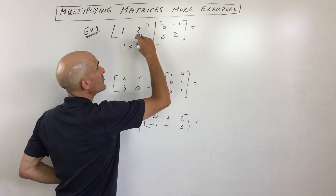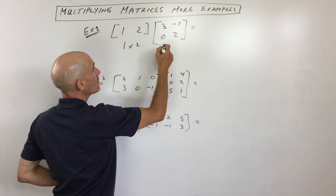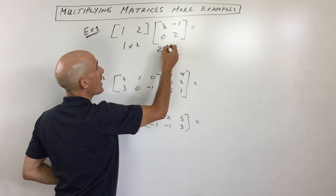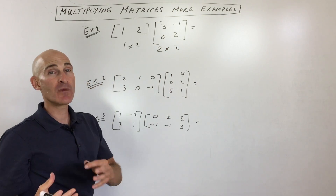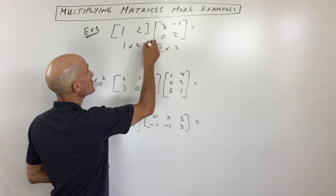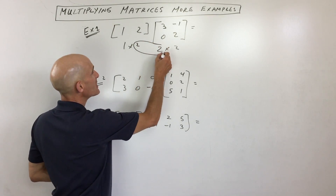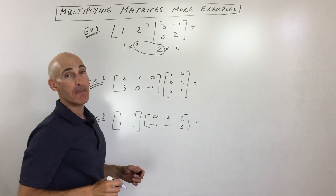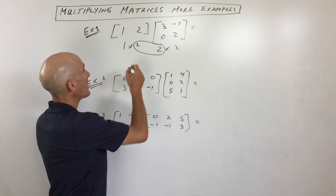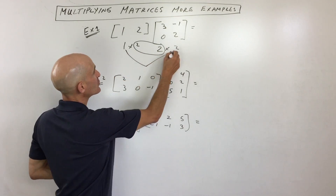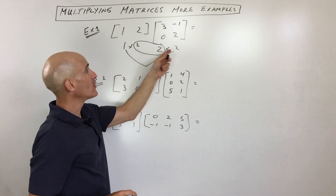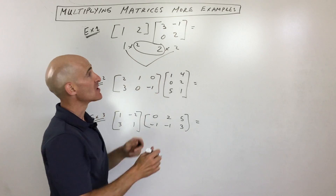This one here is a one, two row by two column matrix. And the key here, in order to multiply these two matrices, you want to make sure that the inner dimensions match. So here they do match. And what we end up with is a matrix that has these outer dimensions — one row, two columns.